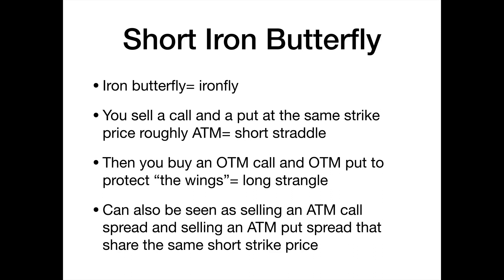To create a short iron butterfly, you sell a call and a put that are at the same strike price — usually at the money. In that case, what you're basically putting on is a short straddle. The problem with being short a straddle is you can lose a lot of money if the stock moves up or down, so one way of hedging against that is doing a short iron butterfly, where you buy the wings.